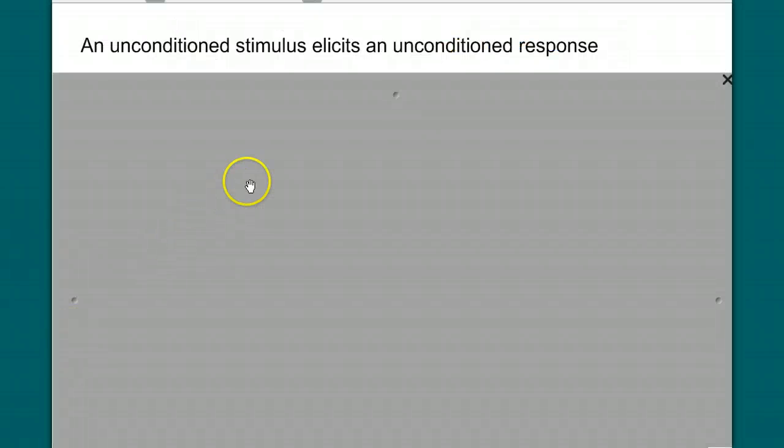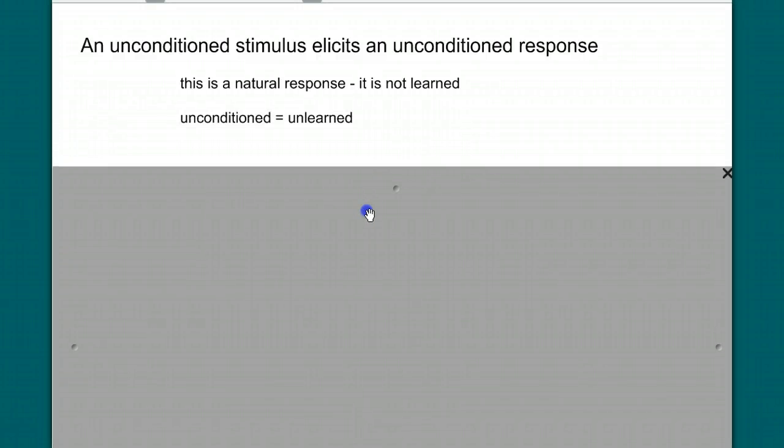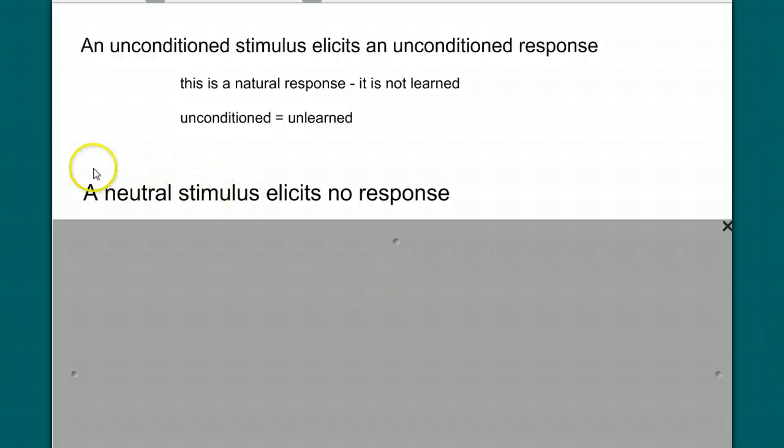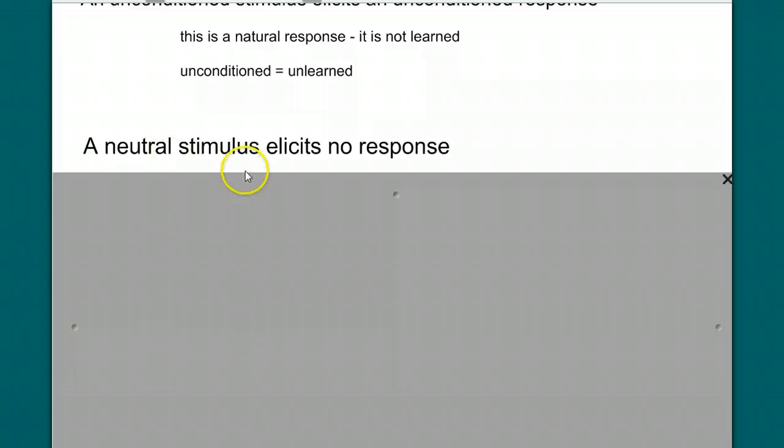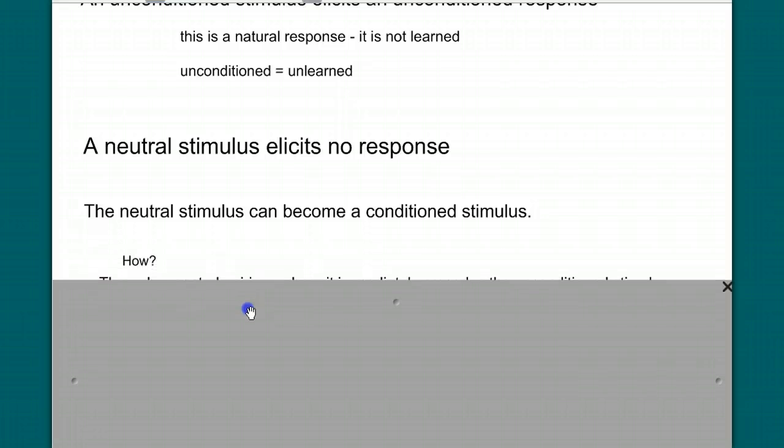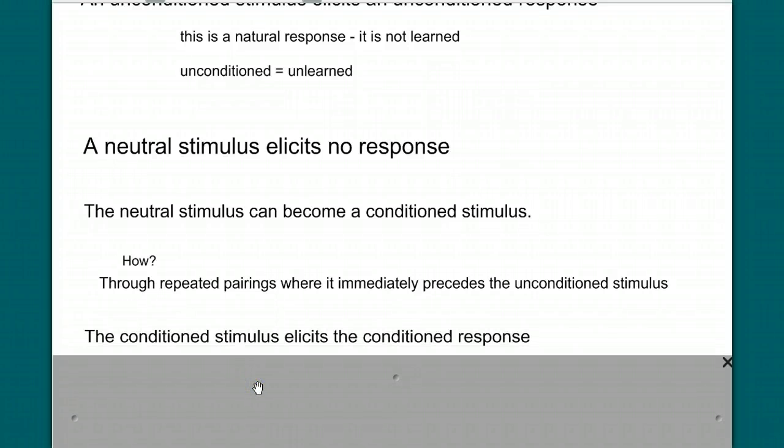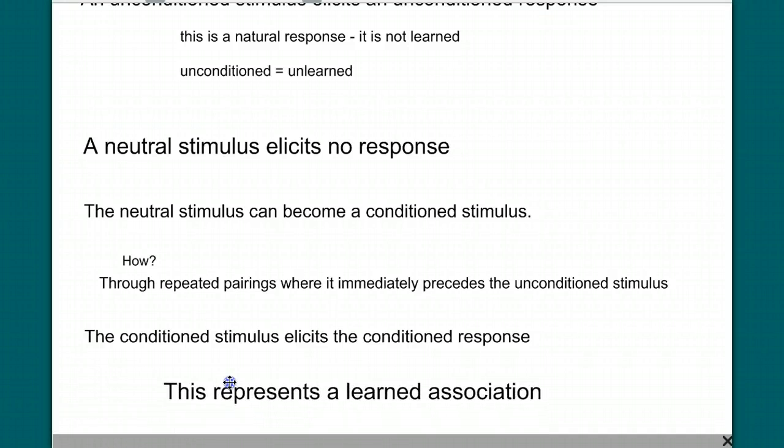So let's review. An unconditioned stimulus elicits an unconditioned response. If you present a dog with food, he will salivate. This is a natural response. It's not learned. Unconditioned, unlearned. A neutral stimulus elicits no response. If you ring a bell at a dog, he might look at you but he's not going to salivate. The neutral stimulus can become a conditioned stimulus or a learned stimulus through repeated pairings where the neutral stimulus, the bell, immediately precedes the unconditioned stimulus. The conditioned stimulus then elicits a conditioned response. Eventually the bell alone will elicit salivation. So salivating to food is an unconditioned response. Salivating to a bell is a conditioned or learned response. This represents an association, a learned association.